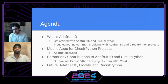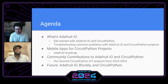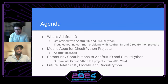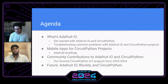We're going to talk about — it's going to be a short stream — what Adafruit.io is, getting started with it and CircuitPython, common problems that we see. I do a lot of customer support and answer customer support like three times a week. We generally see the same patterns. So if you can catch a problem early, it's always good. And maybe there are some things people haven't thought about. Then Trevor is going to talk about mobile apps for CircuitPython projects. We're both going to talk about community contributions to Adafruit.io and CircuitPython — our favorite projects of the past year. And then I'm going to talk about some cool stuff we're doing behind the scenes in Adafruit.io this year.